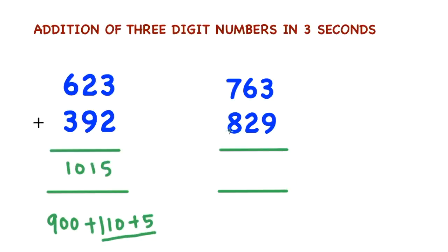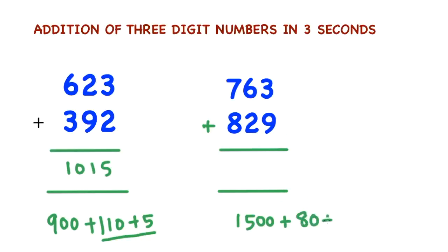Now you see this example. In the hundreds place, 7 is there — you consider 700. In the hundreds place, 8 is there — you consider 800. 700 plus 800 is 1500. Now in the tens place, 6 is there — you consider 60. In the tens place, 2 is there — you consider 20. 60 plus 20 is 80.